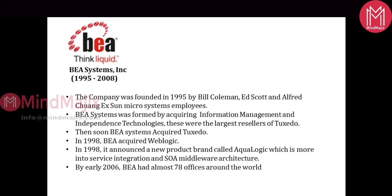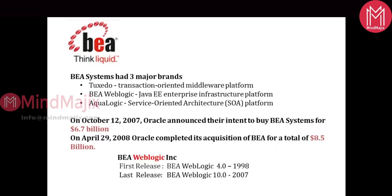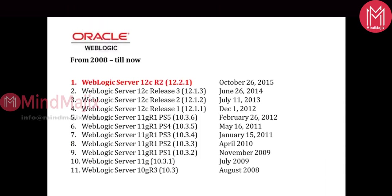BEA WebLogic existed until 2008, after which it was taken over by Oracle, and now we have Oracle WebLogic. The first version of Oracle WebLogic came as version 10. The naming nomenclature can be a bit confusing — this is the Oracle naming and this is the WebLogic version. 10G is version 10.3 and 11G is 10.3.1. Frankly speaking, you don't have WebLogic 11 — you only have WebLogic 11G.